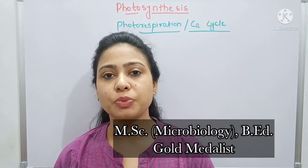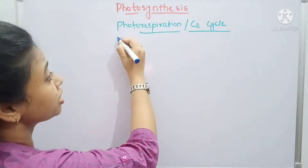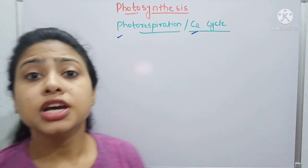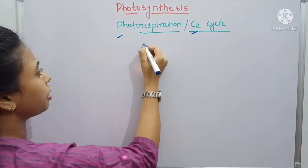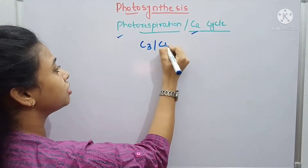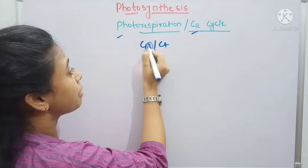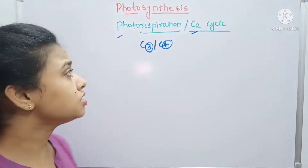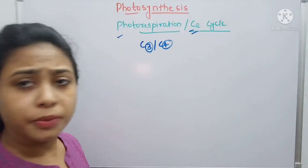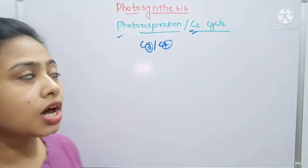Hello everyone, this is Tanja Gupta. Welcome to my channel. Let's start our next topic: what is photorespiration, also called the C2 cycle. We have already covered the C3 cycle and the C4 cycle, named on the basis of their three-carbon and four-carbon products. Now let's look at what the C2 cycle is and whether it has any role.